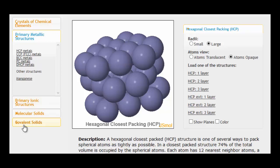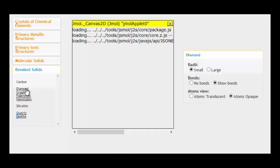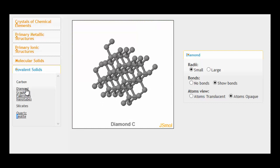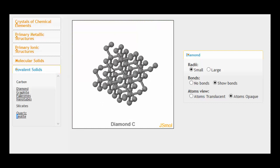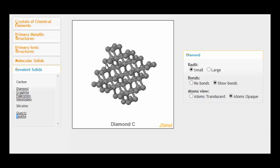So now let's look at a covalent network solid. I'll try diamond. OK. So here's a small section of diamond. And if you look carefully, you can see if we pick out a carbon atom here, you can see that that carbon atom is forming four bonds to four other carbon atoms.